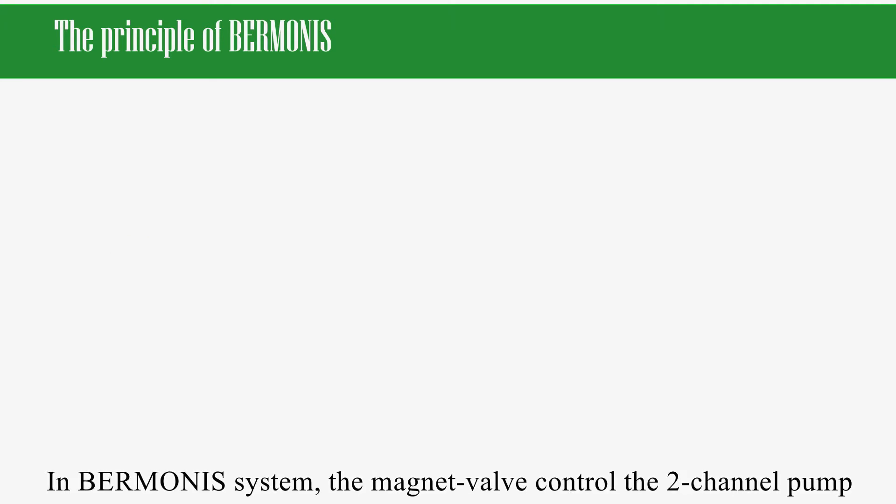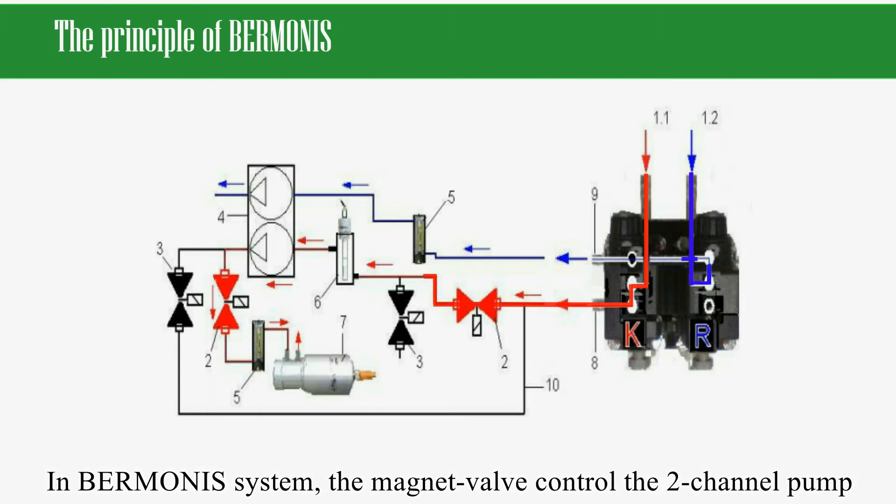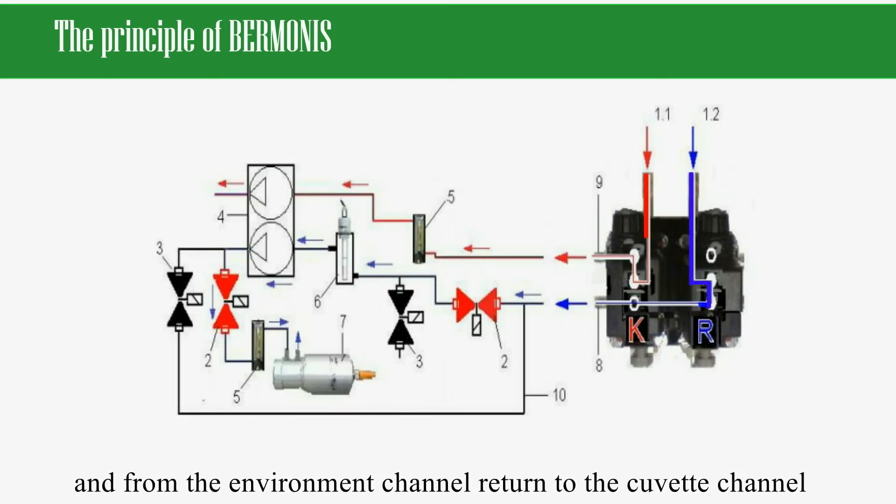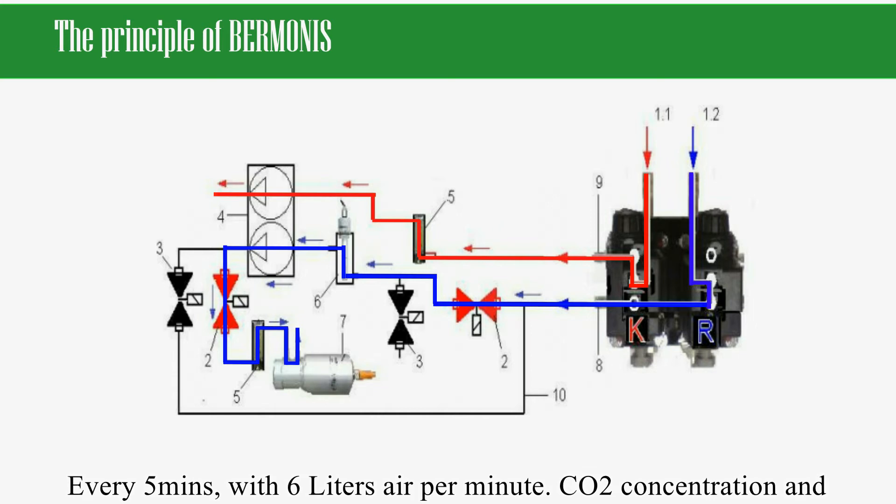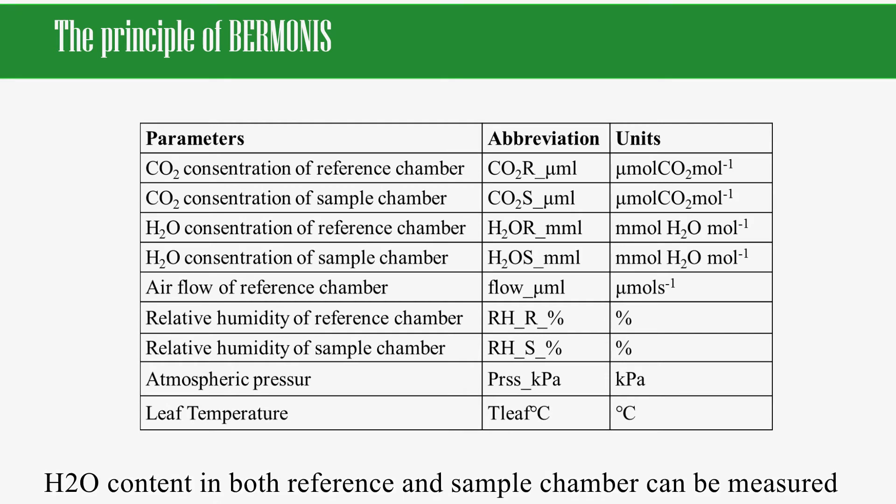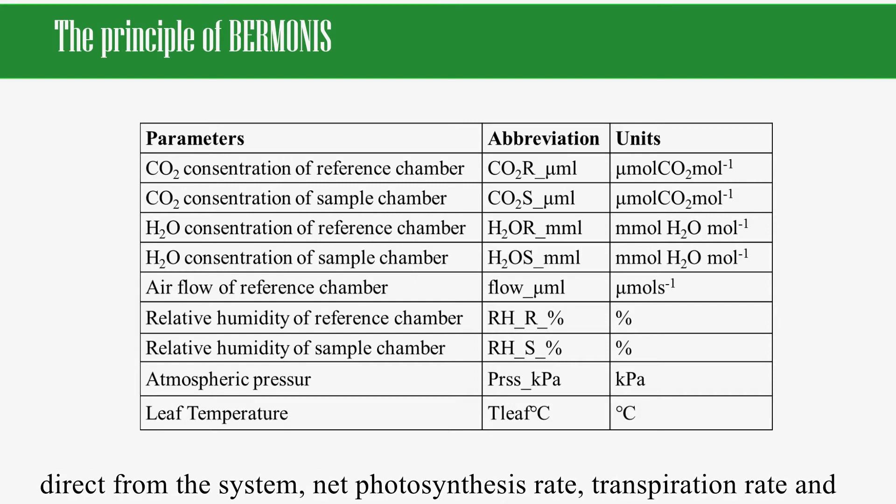In the BERMONIS system, the magnet valve controls the two-channel pump to change the air from the cuvette channel to the environment channel, and from the environment channel return to the cuvette channel every five minutes with six liters of air per minute. CO2 concentration and water content in the gas molecules can be measured directly from the system.